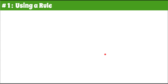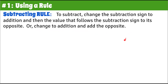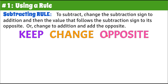Number one way: using a rule. Here's our subtracting rule. To subtract, change the subtraction sign to addition, and then change the value that follows the subtraction sign to its opposite. To summarize: change to addition and add the opposite. Even more student-friendly language: keep, change, opposite.